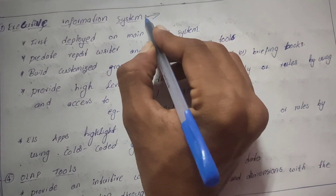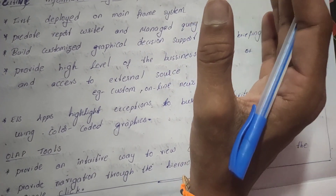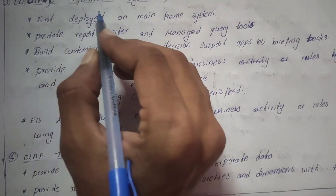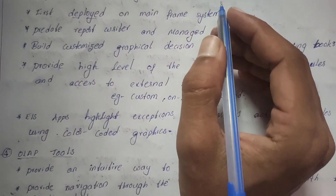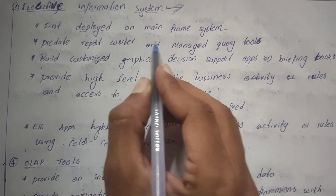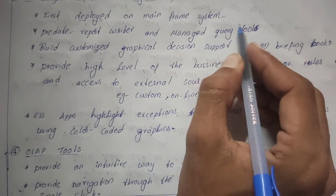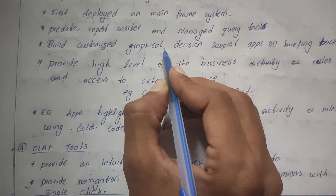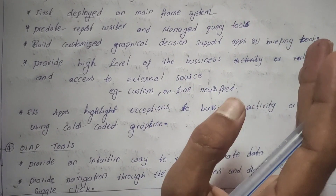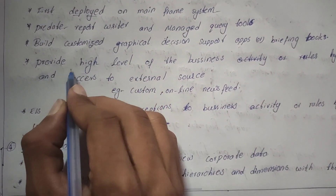Executive Information Systems (EIS) are management-supporting systems designed to support decision-making needs. EIS was first deployed on mainframe systems and predated report writers and managed query tools. It can build customized graphic decision support applications and briefing books.